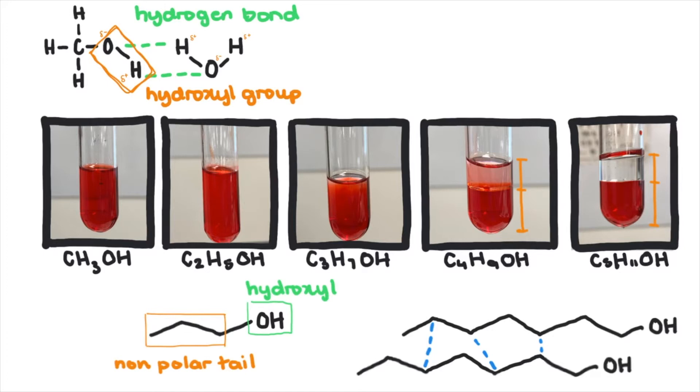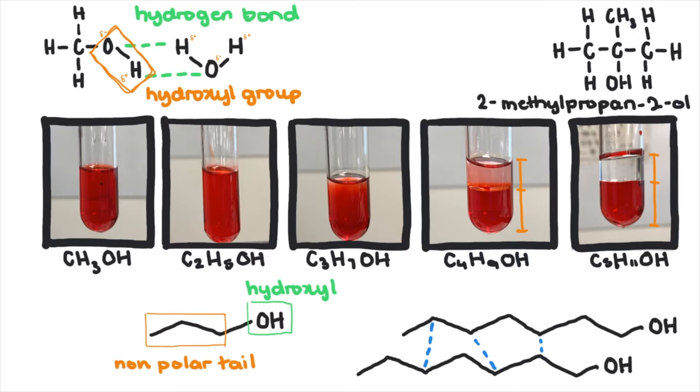For example, 2-methylpropan-2-ol is soluble in water, which is an isomer of 1-butanol, which is insoluble. This is because the surface area of the non-polar region decreases.